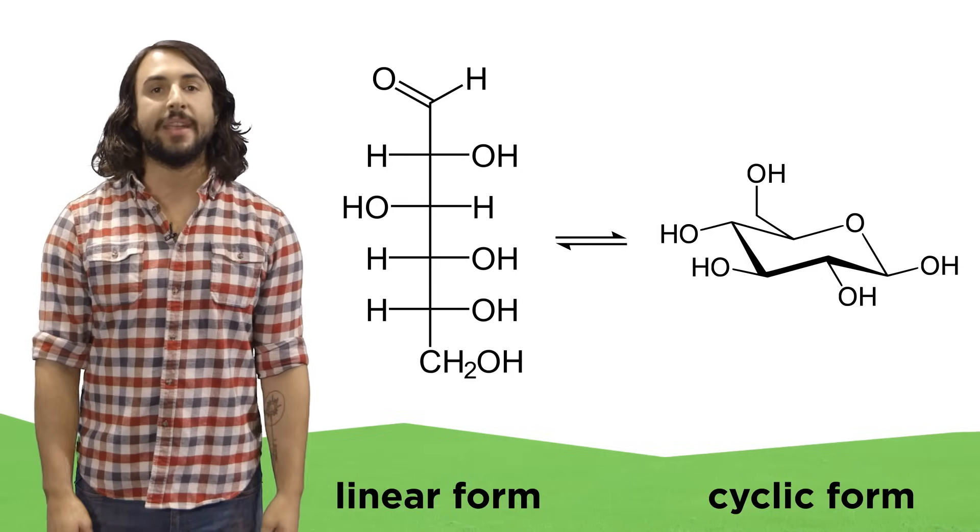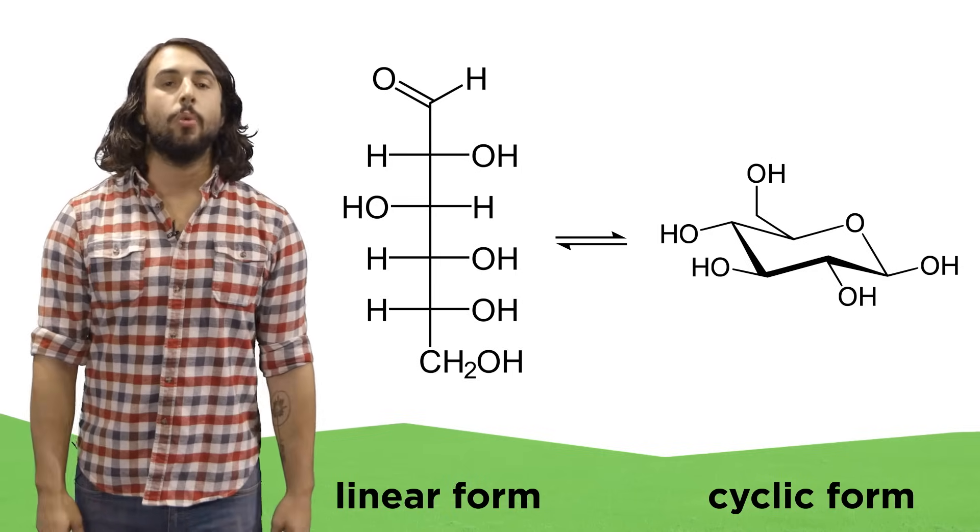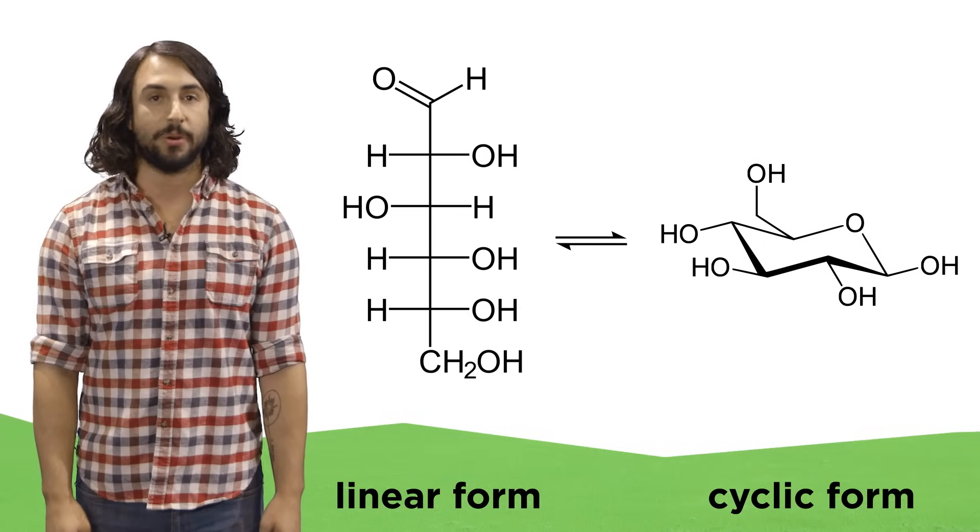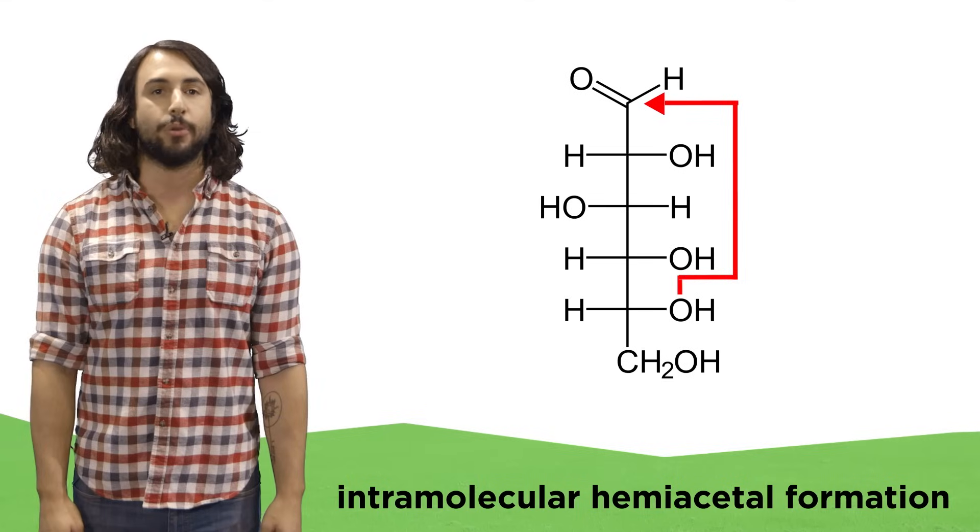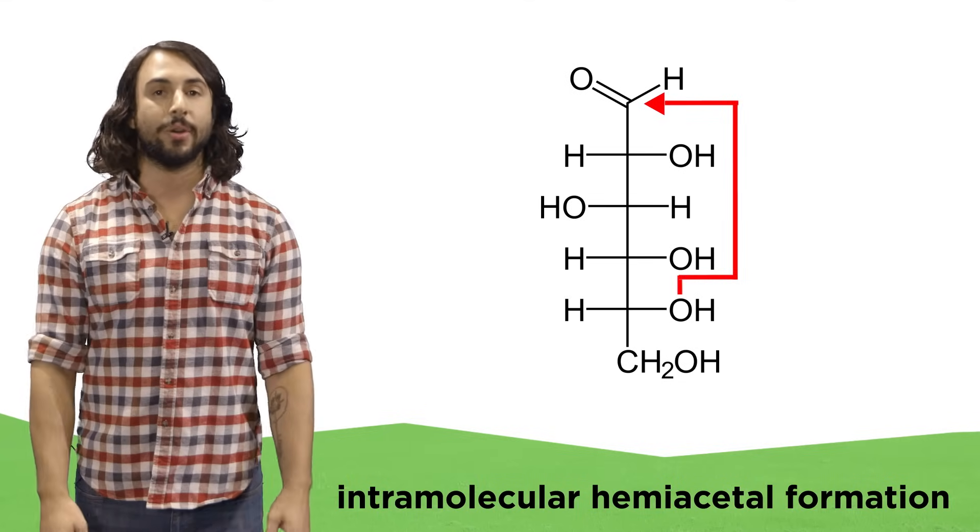Monosaccharides exist in an equilibrium between a linear and a cyclic form, with the cyclic form being highly preferred. They cyclize by an intramolecular hemiacetal formation, a mechanism we learned in organic chemistry.